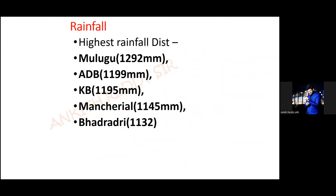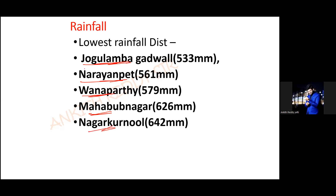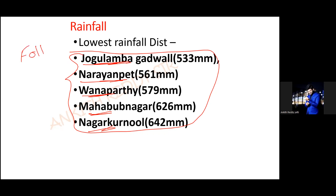And what are the districts that see the lowest rainfall in Telangana? This is the drought-affected region of Telangana — Palamur district or the Mahabubnagar district. That's why migration is popular in this region. Even Telangana folk songs talk about the issues of Telangana.